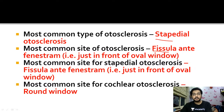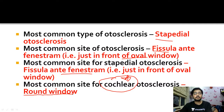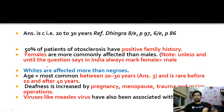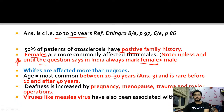For cochlear otosclerosis, the most common site changes to the round window - that is why you get sensorineural hearing loss. Common age for otosclerosis is 20 to 45 years, most commonly between 20 to 30 years. Fifty percent have a positive family history. Females are more common clinically in India. Histopathologically, males and females are equally affected. Whites are more affected. Pregnancy, menopause, puberty, major operations, trauma, and viral infection like measles are associated aggravating factors.